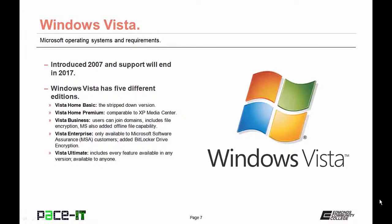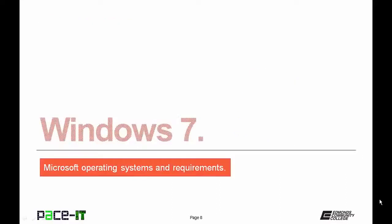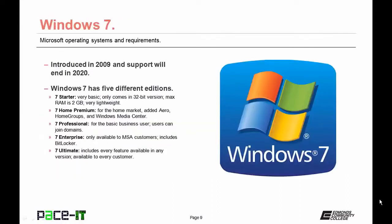The last Vista edition is Vista Ultimate — every feature available in any edition is available in Vista Ultimate. Windows 7 was introduced in 2009 and support for it ends in 2020. Windows 7 has five different editions.